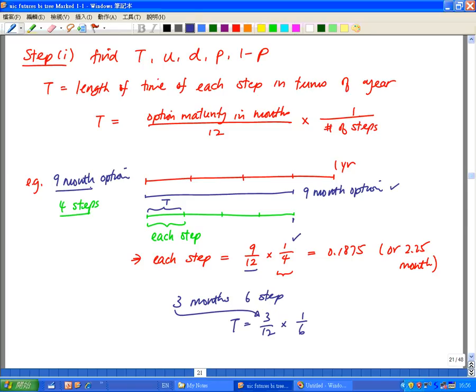It doesn't have to be 9 months and 4 steps. It can be whatever the maturity of the option is, and the steps would be whatever is requested in the question, or if you're doing it for real, then the closer the better, because then you get more accurate pricing with more steps.